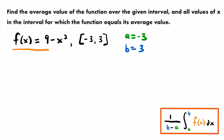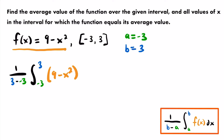With f(x) = 9 minus x squared, we set up: 1 divided by (3 minus negative 3), multiplied by the integral from negative 3 to 3 of (9 minus x squared) dx. Now our next step is to simply solve this definite integral to find the average value.